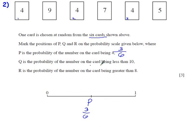Now Q is the probability of the number on a card being less than 10. So we have a look at how many of these are less than 10. Well, 1, 2, 3, 4, 5, 6. So 6 of them are less than 10. So that means all of them are less than 10. So we could say we are certain that whichever card we pick is going to be less than 10. And because it's certain, we put Q here under 1. Because 1 means it's certain.